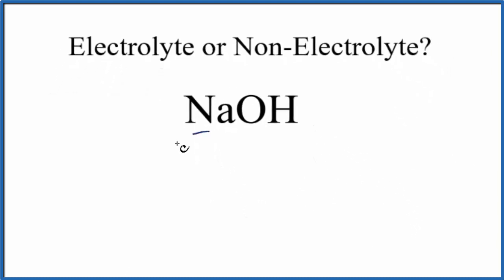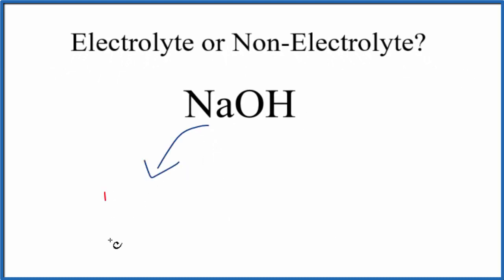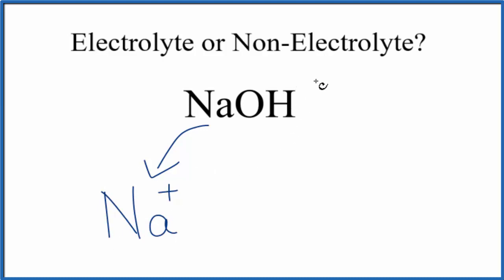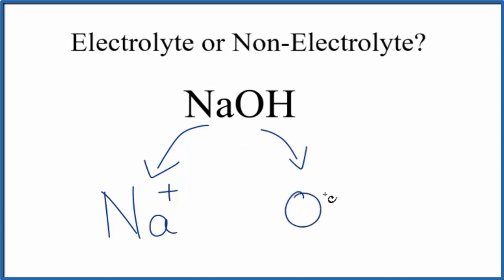Sodium is in group one on the periodic table, so it forms one-plus ions — the sodium ion. And then you just need to remember that OH, when it's bonded to a metal, is the hydroxide ion, OH, and the whole thing has an ionic charge of one minus.